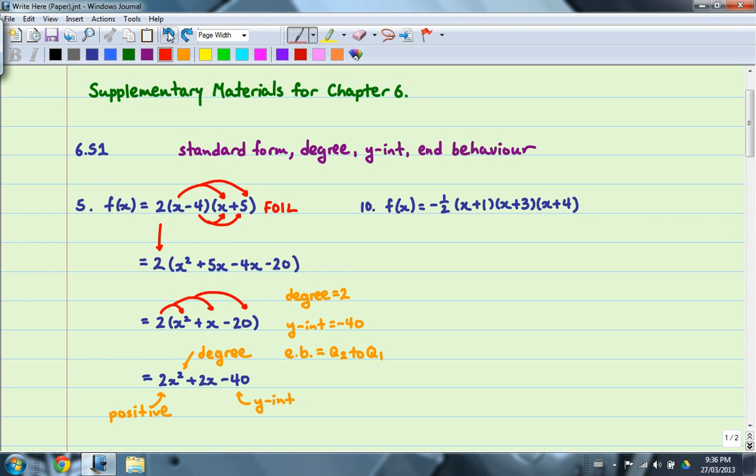We'll continue with number 10. Again, we start by foiling two of the binomials. Now, it doesn't matter if you do these two first or if you work on these two first. It's a matter of preference. I, myself, like working with the last two terms first and kind of work my way to the left. So I'm just going to go ahead and draw my arrows in.